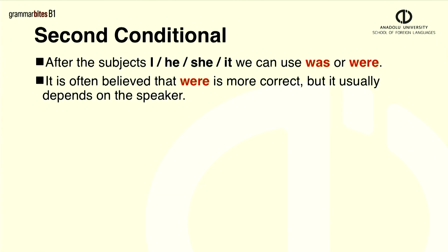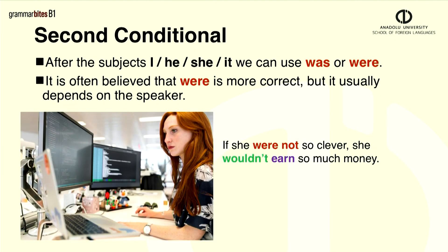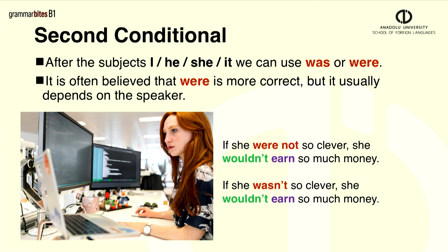After subjects I, he, she and it, we can use was or were. It is often believed that were is more correct, but it usually depends on the speaker. If she were not so clever, she wouldn't earn so much money. This means the same as if she wasn't so clever, she wouldn't earn so much money.